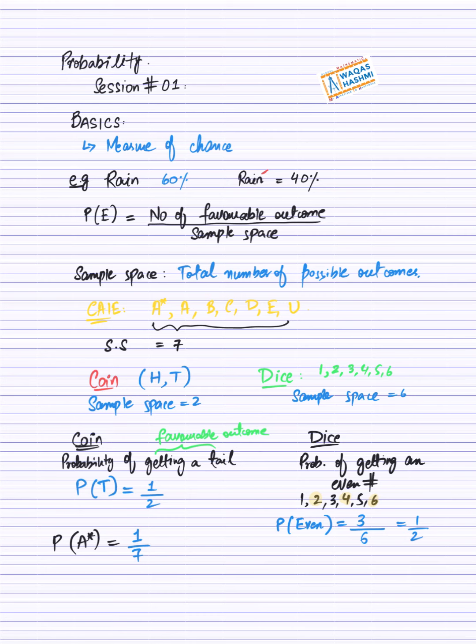So that is a basic session of probability. Probability kya hota hai? It is a measurement of chance. Formula kya hai? Number of favorable outcomes divided by sample space. Sample space kya hota hai? Total number of possible outcomes. Humne ye example consider karhe, coin ki aur dice ki. Aur humne kuch examples, question type kiye. Kya agar aapko even number chahiye hai, toh even number humare paas tine ho sakti hai. Toh three divided by possible outcomes, aapke paas six hai. Toh answer aayega one over two.